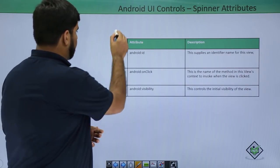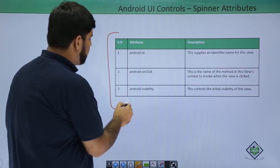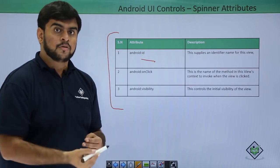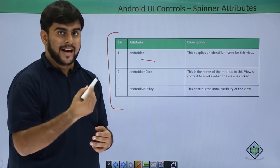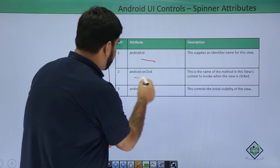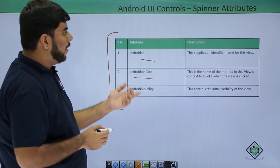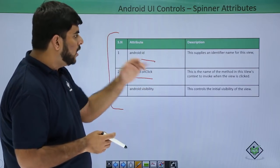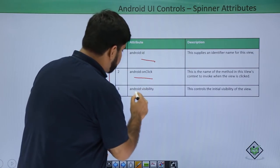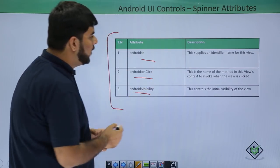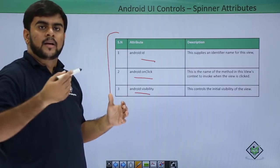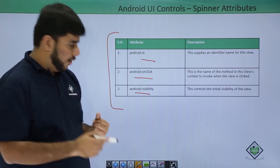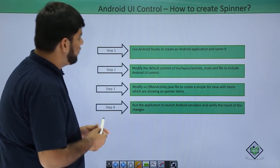First of all, the properties of the Spinner. Starting from the ID — ID is a unique name for the Spinner, we use this ID in our activity or in our Java file. Then is the onClick method — we call this method whenever the view is clicked. Then is the visibility — by visibility we mean whether the Spinner is visible, invisible, or gone.